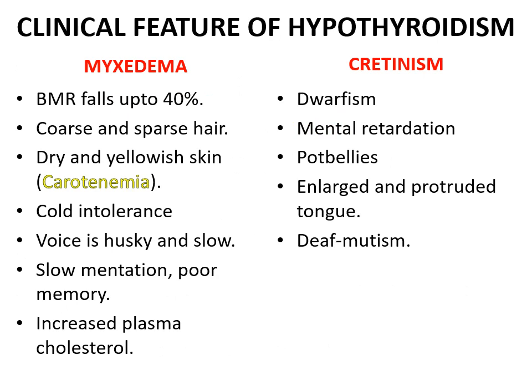Clinical features of hypothyroidism: the basal metabolic rate falls up to 40% in myxedema. There is coarse and sparse hair, dry skin also associated with carotenemia. Thyroid hormone is necessary for hepatic conversion of carotene to vitamin A, and accumulation of carotene in the blood in hypothyroidism is responsible for the yellowish tint of the skin. Carotenemia can be distinguished from jaundice because in carotenemia the sclerae are not yellow.